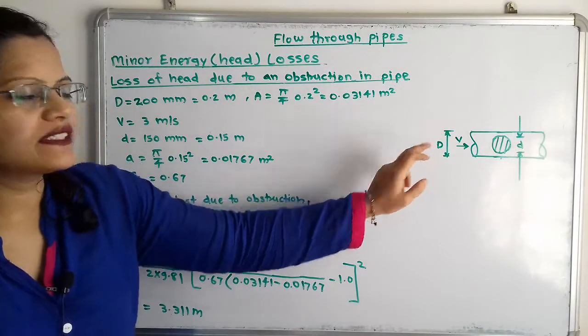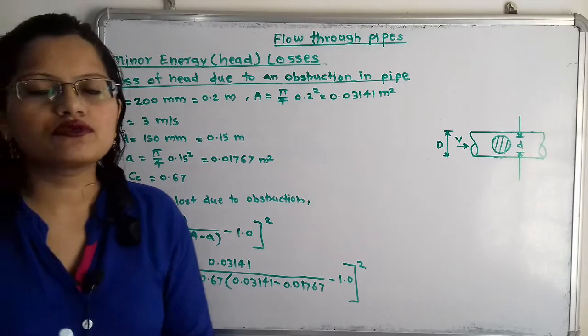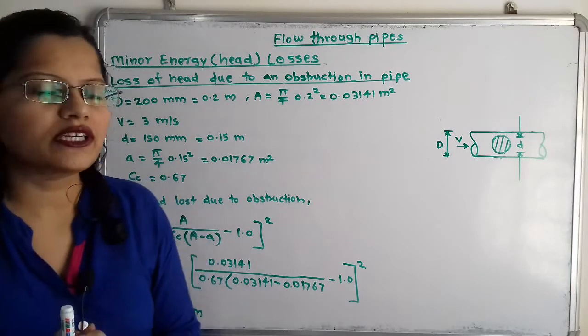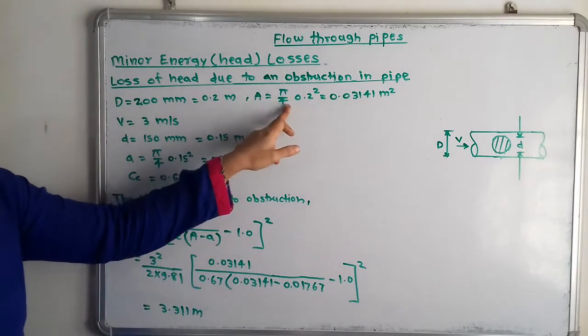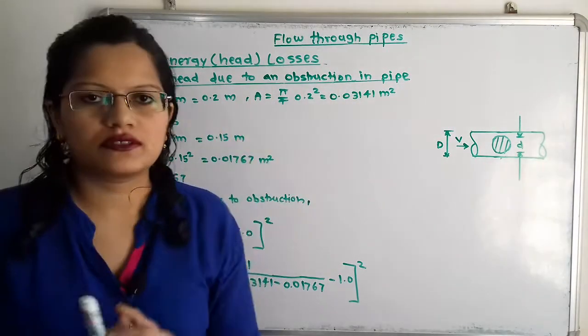The diameter of pipe is capital D, which is given as 200 millimeters, equal to 0.2 meters. From that we can calculate the area of pipe as π/4 D² which equals 0.03141 meter square.